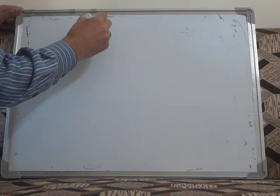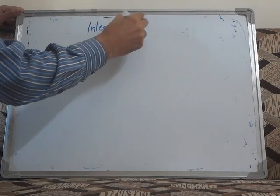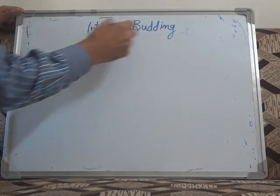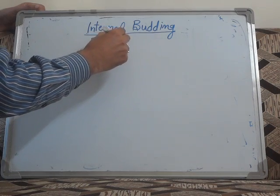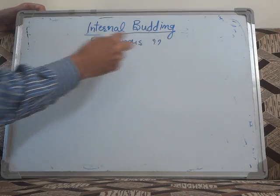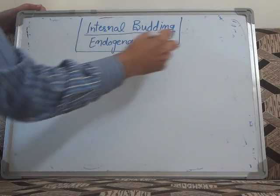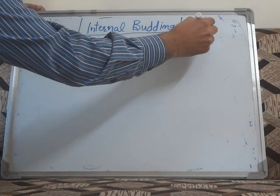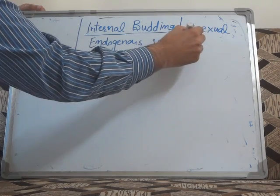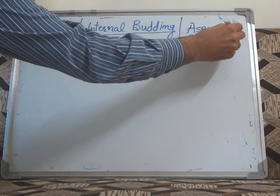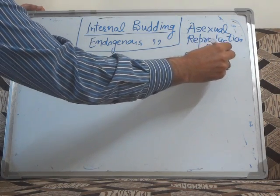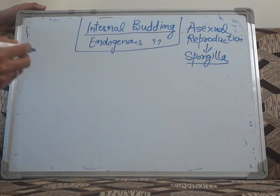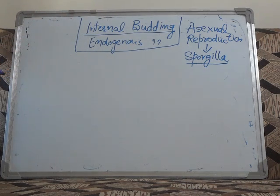Dear friends, today let's talk about internal budding. This is also known as endogenous budding. This is a method of asexual reproduction in the freshwater sponge known as Spongilla. The asexual method of reproduction is known as internal budding or endogenous budding.